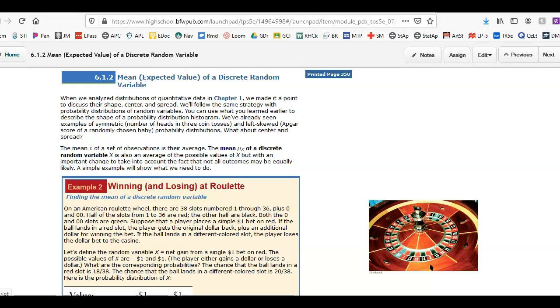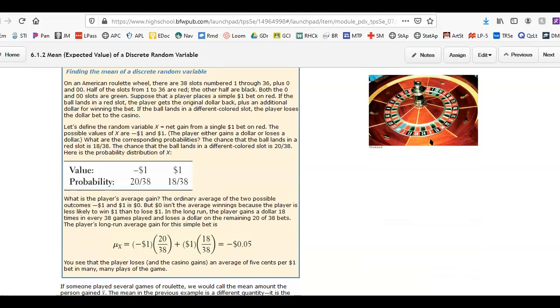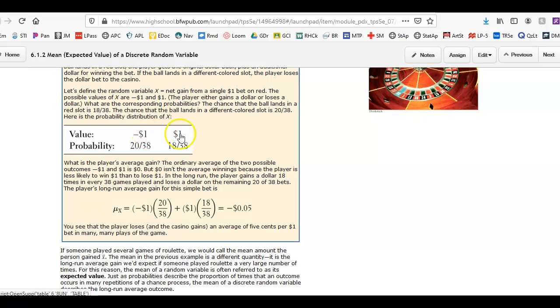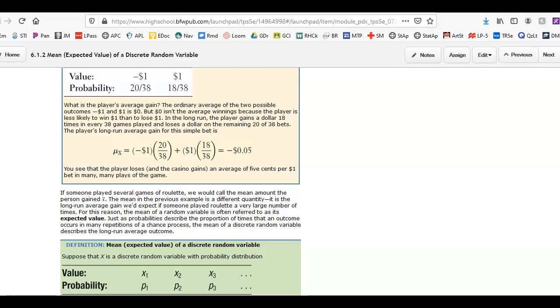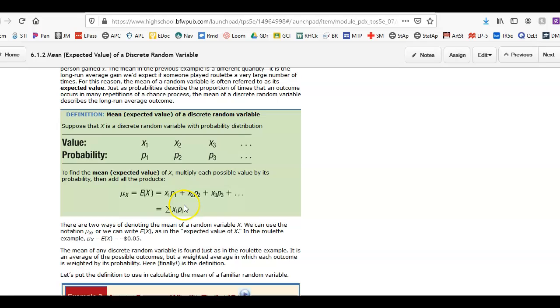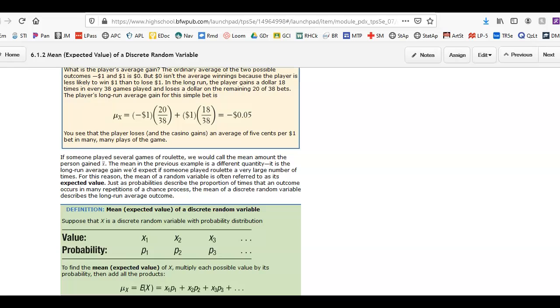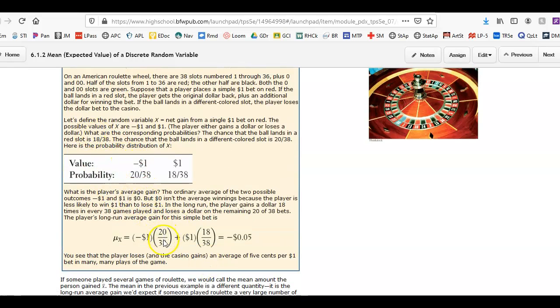So we're going to get into, how do you calculate the mean? That's a measure of center of a discrete random variable. So if you have a probability distribution, I can't just add the numbers and divide by 2 in this case, because they're not equally weighted. So I'm going to take the value times its probability to figure out my weighted average, which gives me what's called the expected value of that random variable. So here's the formula, mu sub x, the expected value of some random variable x. In our scenario here, you lose $1.20 out of 38 times, and you win $1.18 out of 38 times. So over the long run, you're going to lose 5 cents for every dollar that you bet.